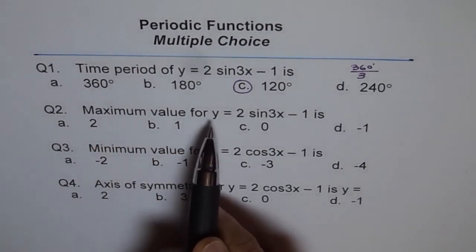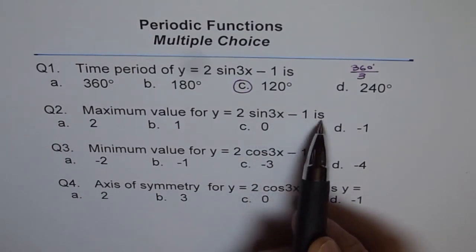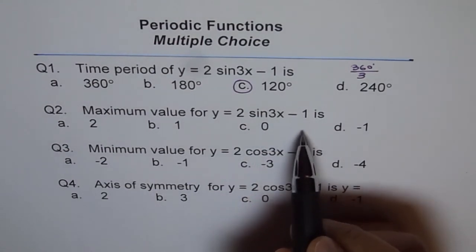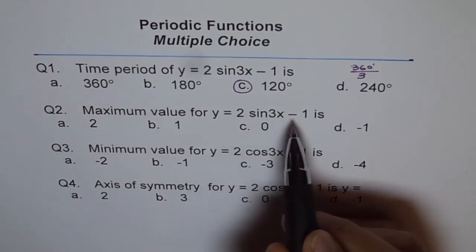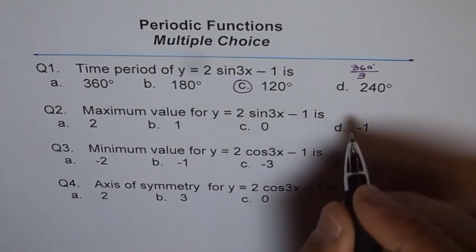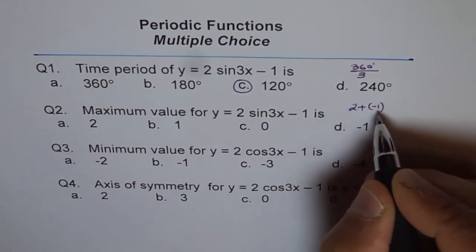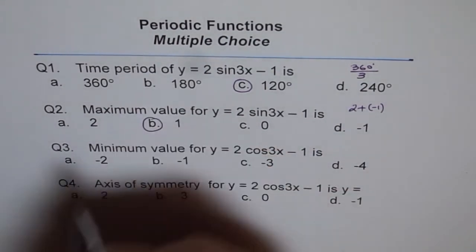Maximum value for y = 2 sin 3x − 1. Now that means the wave has been shifted 1 unit down and its amplitude is 2, so it is 2 plus −1. So it is 2 more than −1, which gives you 1, and the answer is B.